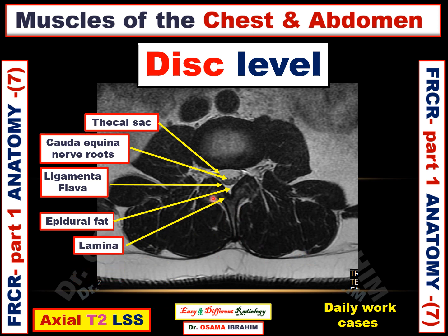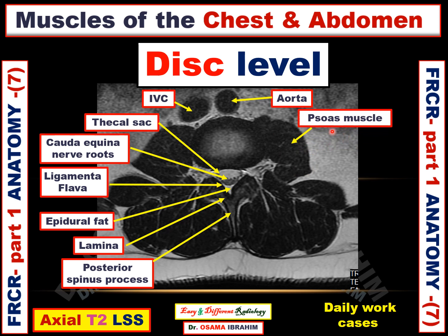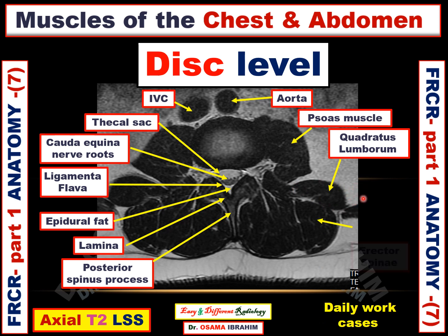This is the lamina — right lamina and left lamina — and this is the spinous process posteriorly. These two rounded structures anterior to the vertebra are the inferior vena cava and the aorta. This muscle appearing in the paraspinal region anteriorly is the psoas muscle. The muscle between the psoas muscle and the erector spinae muscle is called the quadratus lumborum muscle. And this one is the erector spinae muscle.